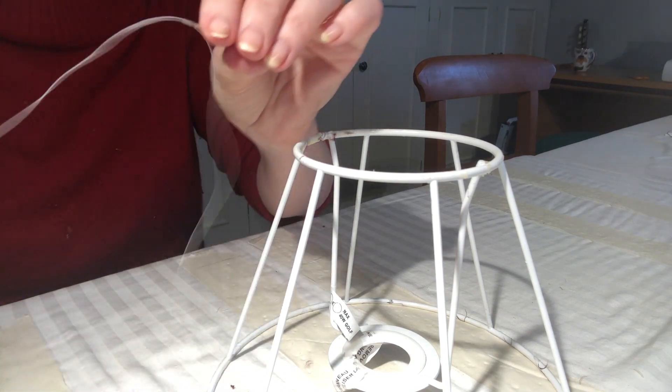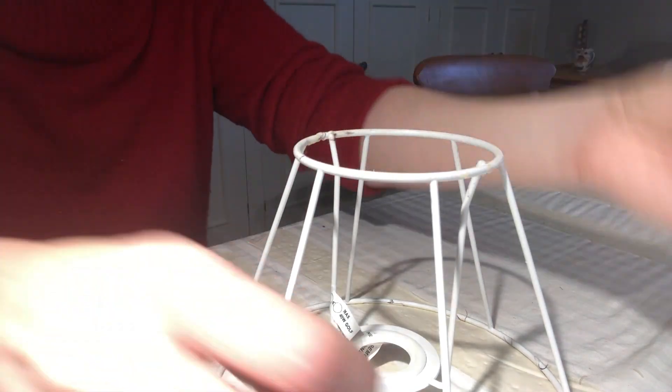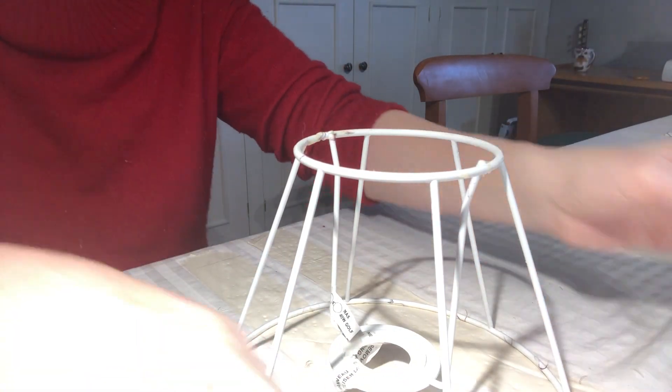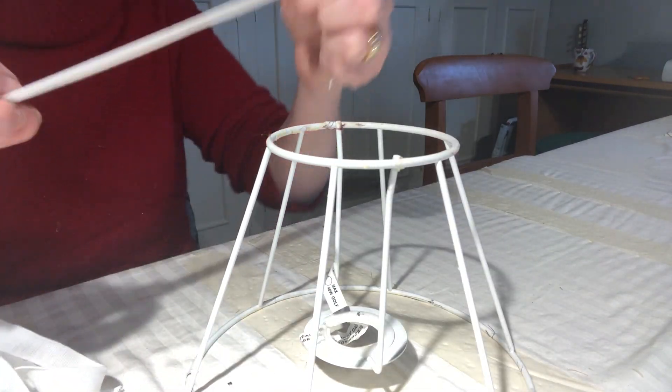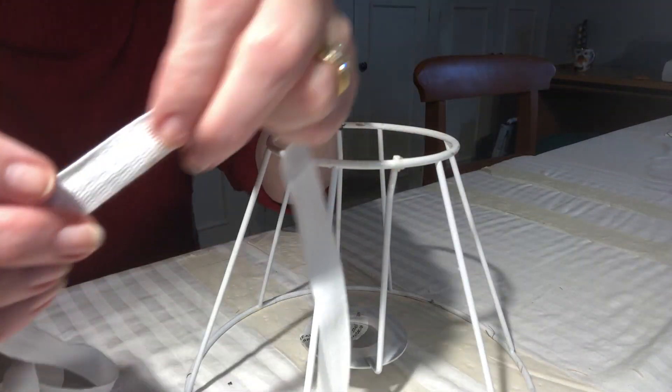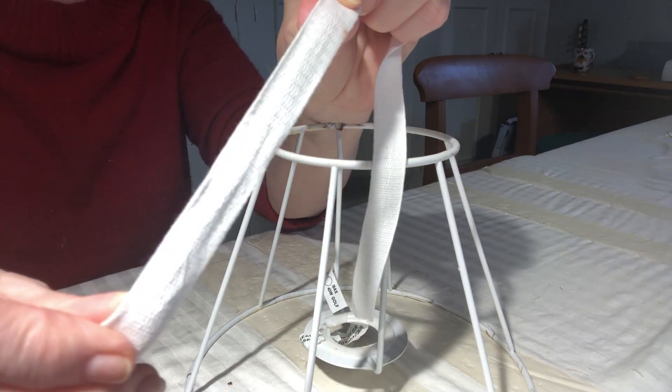Traditionally, frames were bound with bias lining strips. If you've ever stripped a really old vintage frame, it's quite an education. However, today we have this lovely stuff called cotton India tape that comes in white or black in varying widths.